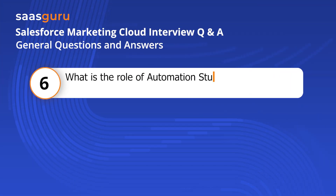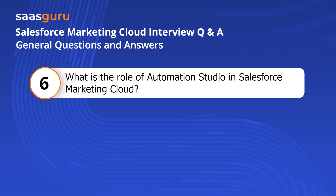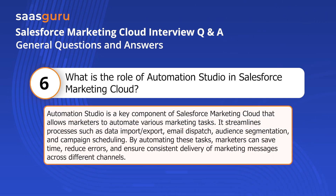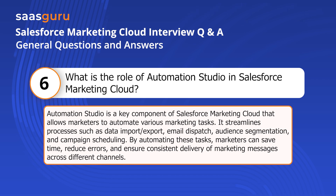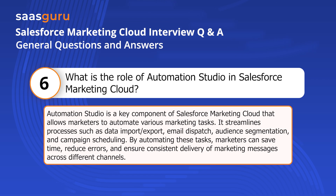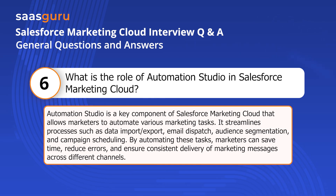Question six: What is the role of Automation Studio in Salesforce Marketing Cloud? Automation Studio is a key component that allows marketers to automate various marketing tasks. It streamlines processes such as data import/export, email dispatch, audience segmentation, and campaign scheduling. By automating these tasks, marketers can save time, reduce errors, and ensure consistent delivery of marketing messages across different channels.